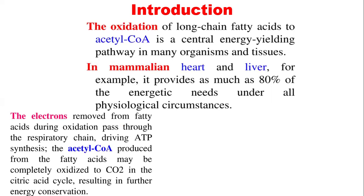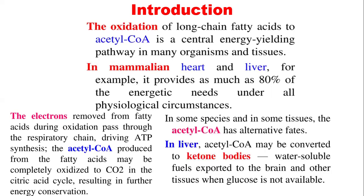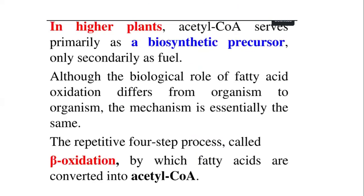The electrons removed from fatty acid oxidation pass through the respiratory chain in the inner mitochondrial matrix, and the energy obtained in the form of ATP is used by the cell. The acetyl-CoA produced from fatty acid oxidation can be completely oxidized or used for biosynthesis. When oxidized to carbon dioxide in the citric acid cycle, it results in production of energy. In some species and tissues, acetyl-CoA has alternative fates — in the liver, for example, it can be converted to ketone bodies, which are water-soluble fuels exported to the brain and other tissues when glucose is not available.